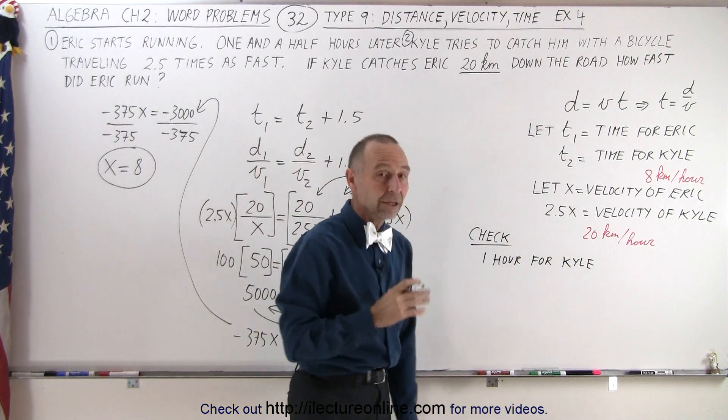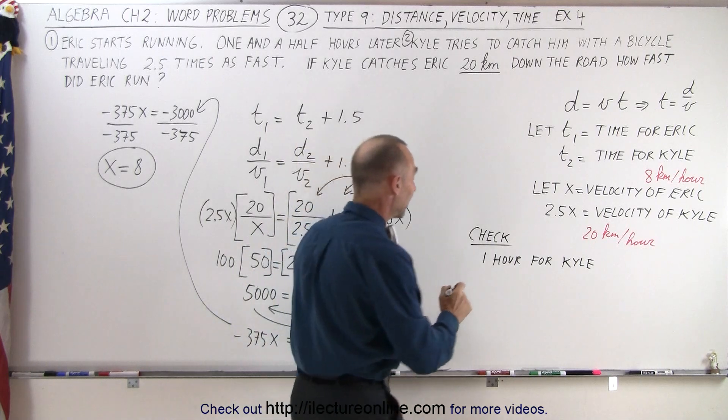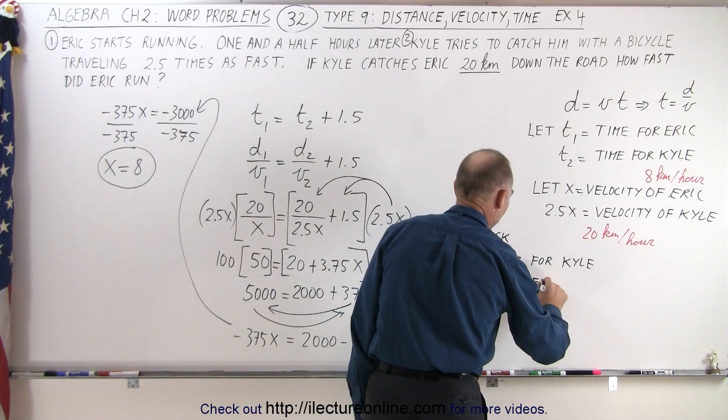If Eric travels 8 kilometers per hour, well 8 times 2.5 gives us 20. That means 2.5 hours for Eric.